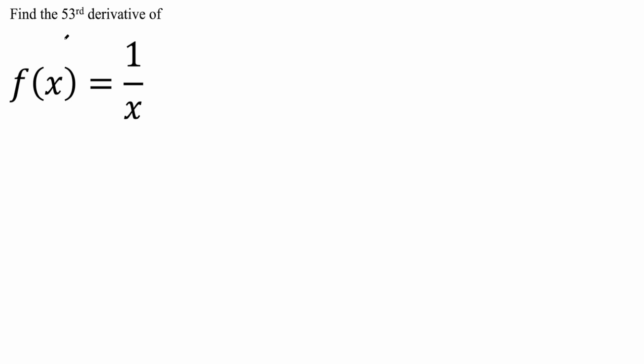For a problem like this, whenever you're finding a large derivative, like the 53rd derivative or 5017th derivative, you need to ultimately find a pattern. That's what we need to do. So instead of saying 1 over x, I'm going to say we have f of x equals x raised to negative 1.